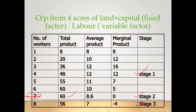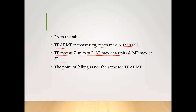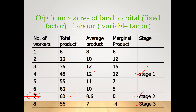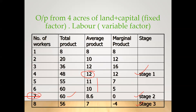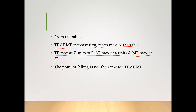After that, TP is declining. AP is maximum at the 4th unit, and after that AP is also declining. MP is maximum at 3 units of labor — the third unit of labor gives MP of 16, and after that MP is declining. The point at which total product, average product, and marginal product are highest is different for each. The falling is not the same for TP, AP, and MP.